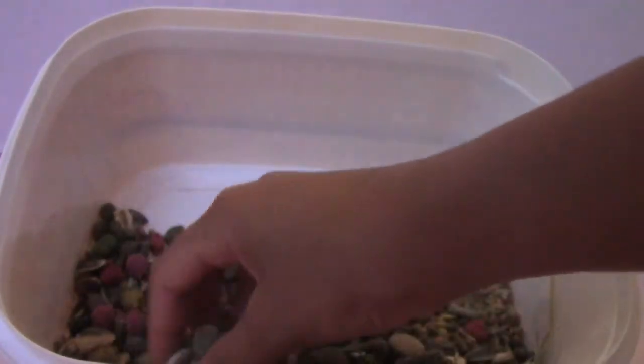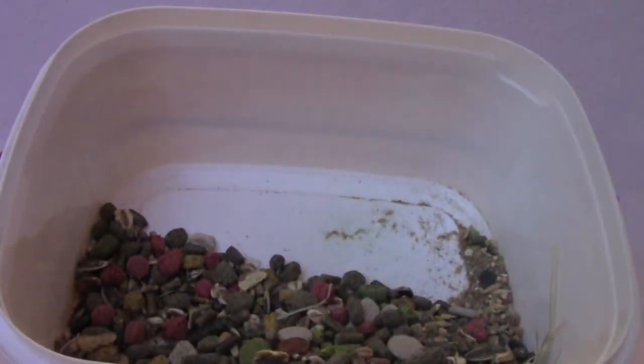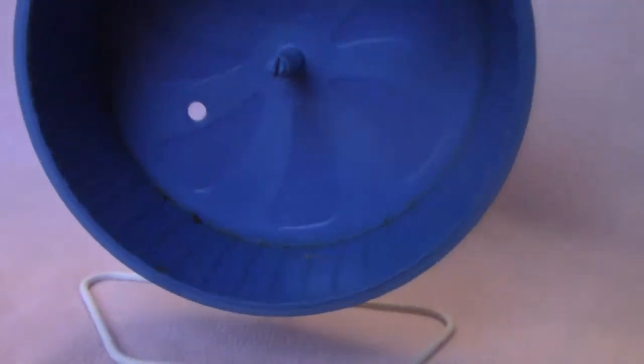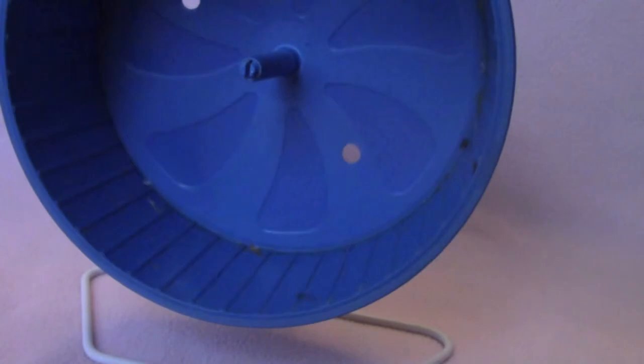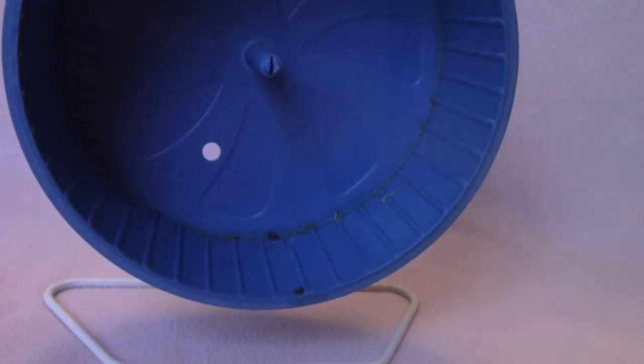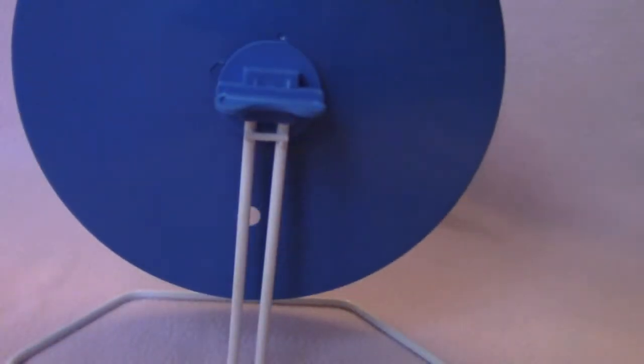Now another must have is a wheel. A wheel is what the hamster runs on to get its exercise. Without the wheel, the hamster could get obese. And this is also a boredom breaker. So right here I just have a comfort wheel. And you always want to make sure that the wheel is running smoothly and it's just running to its best ability.